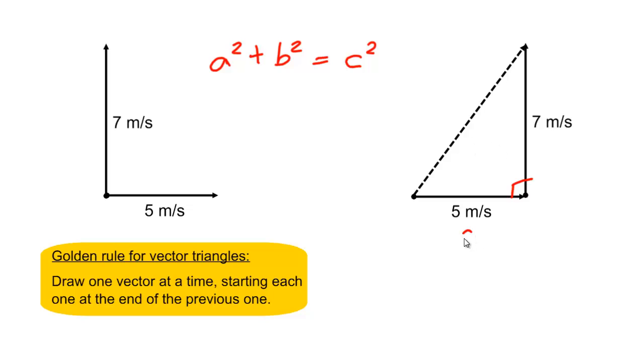So, this side we can call a, this side is b, and the hypotenuse is what we're trying to find out here, is c. So, this follows that 5 squared plus 7 squared equals c squared.